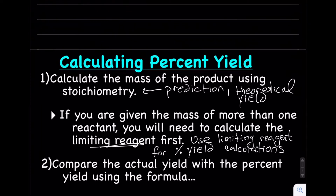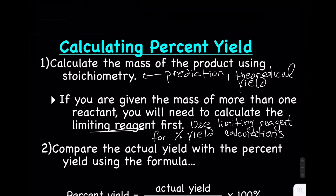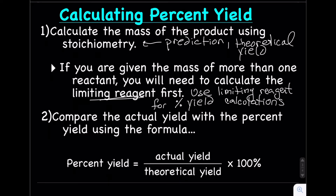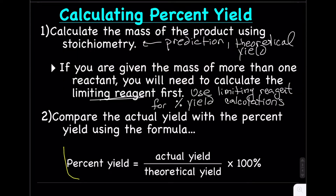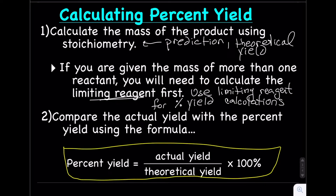Then you compare the actual yield with the theoretical yield using this formula: percent yield equals actual yield divided by theoretical yield, times 100. And that's really all there is to it.